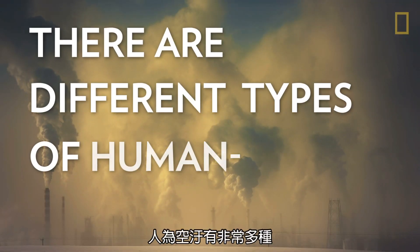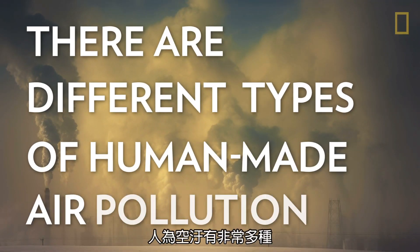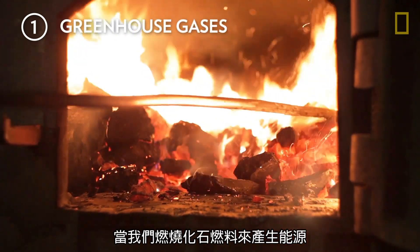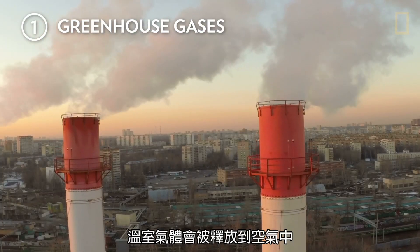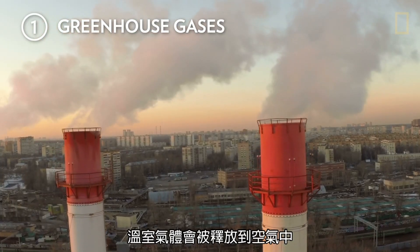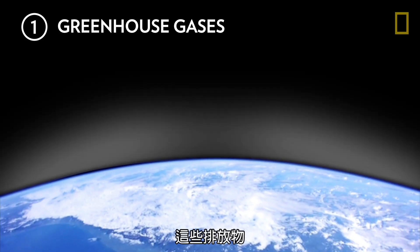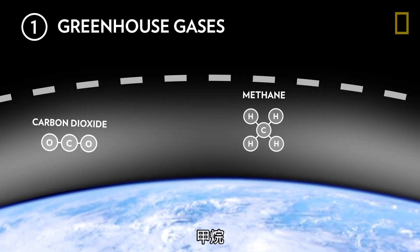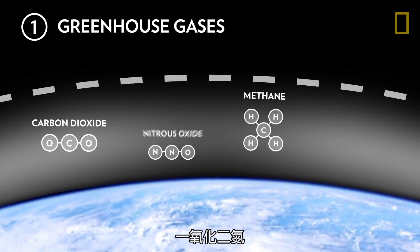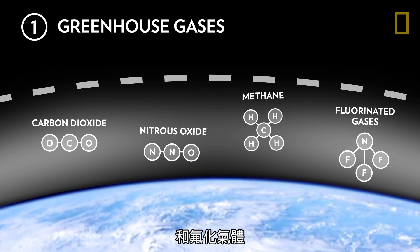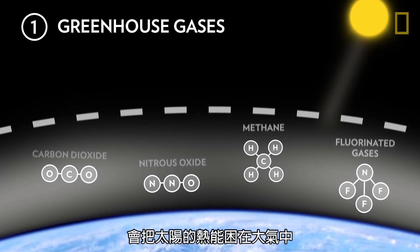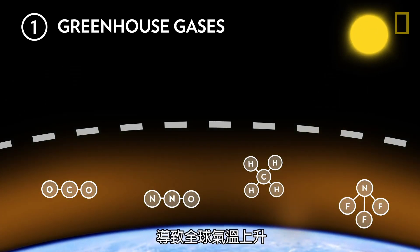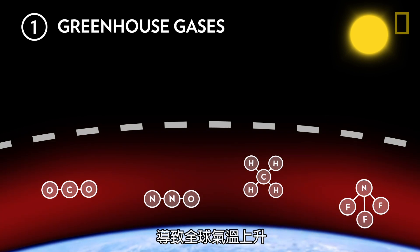There are different types of human-made air pollution. When we burn fossil fuels to produce energy, they release greenhouse gases into the air. These emissions, such as carbon dioxide, methane, nitrous oxide, and fluorinated gases, trap heat from the sun in Earth's atmosphere, leading to a rise in global temperatures.